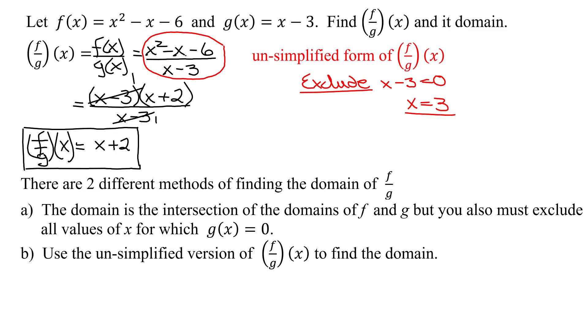Writing the domain in words, I get the domain of f divided by g of x is all real numbers except x equals 3. But often we're asked to express this domain in interval notation. So remember, if I graph my domain on the number line, I want everything except x equals 3.